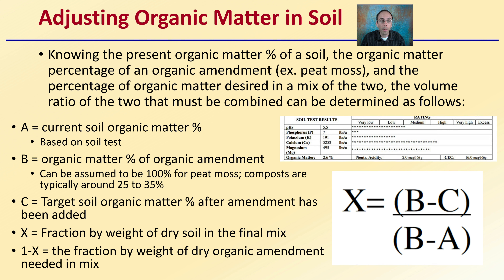We also need the organic matter percentage in the organic amendment we'll be adding — in this case I'm going to use peat moss as an example, as well as compost — and the percentage of organic matter desired in the final mix. The volume ratio of the two that must be combined will be determined as follows. You always start with a soil test that includes an organic matter percentage.